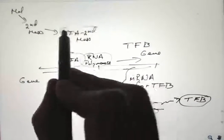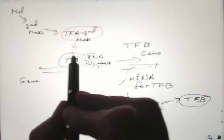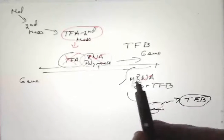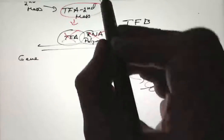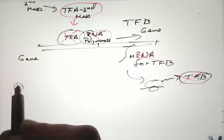And that normally would result in translation through a ribosome to make transcription factor B. But if transcription factor A is bound to the second messenger, it doesn't happen. It doesn't bind. You don't get messenger RNA, and you don't get transcription factor B.